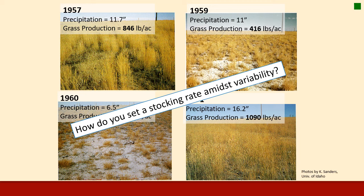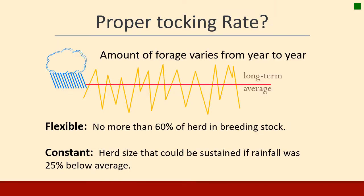How do you set stocking rate amidst this incredible variability? This is where the art and science of range management comes in — it's a science in that we can measure these things, but it's really an art to figure out how to raise livestock in this amount of variability. One idea is to be nimble and flexible. Ranchers who do this try to keep a little more than half of their herd in breeding stock — cows and calves or sheep and lambs — and always keep part of the stocking rate that could be accomplished in good years with steers or stocker animals.